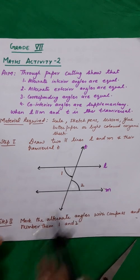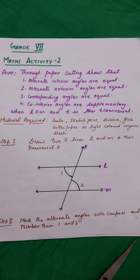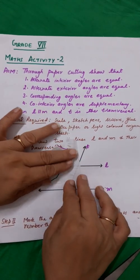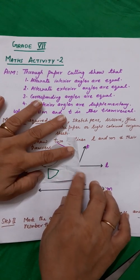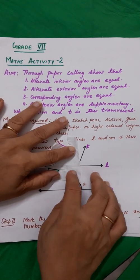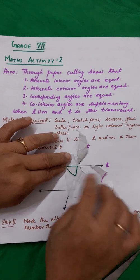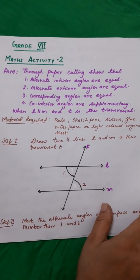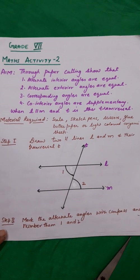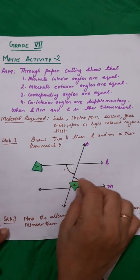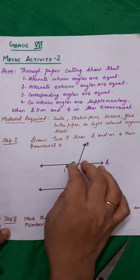Name them 1 and 2. Next step is to make the replicas. Replicas are the images of these angles. I have taken this butter paper and you can see the impressions in it. I will mark it with the sketch pen and then cut it. Once the replicas are prepared, you can see replica of angle 1 and angle 2 have been taken.